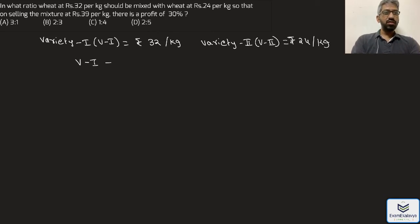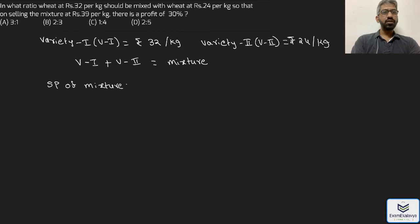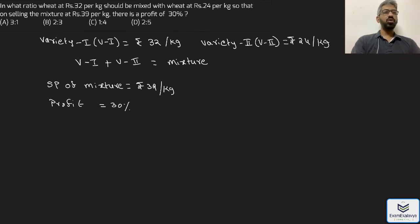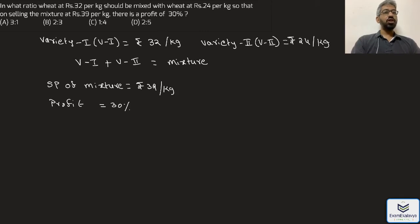Variety one is combined with variety two to get a mixture. The selling price of that mixture is 39 rupees per kg. It is important to note that 32 rupees per kg and 24 rupees per kg are the cost prices for the seller. First, we have to calculate the cost price of the mixture.